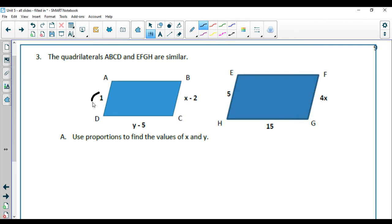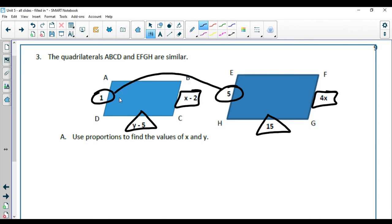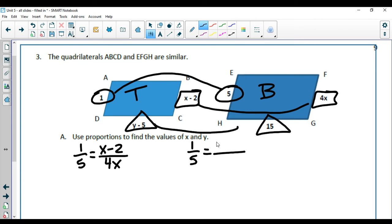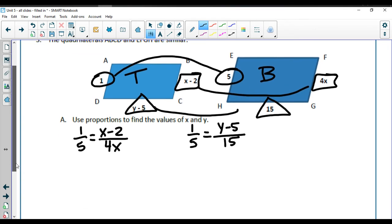Number 3 that we have here: 1 is in the same spot as the 5, the y minus 5 is with the 15, and the x minus 2 is with the 4x. 1 and 5 are my two plain numbers. I'm going to call this my top, this my bottom, so I'm going to do 1 over 5, 1 over 5. And for my x, I have x minus 2 over 4x. That's going to be a fun one. And for the y's, I have y minus 5 over 15.